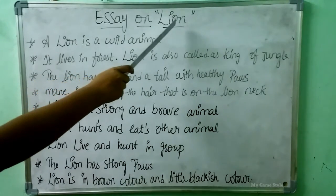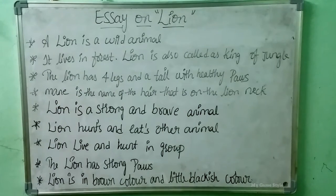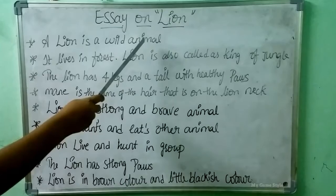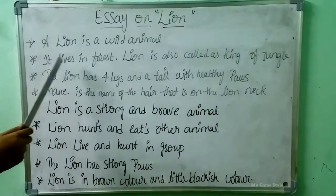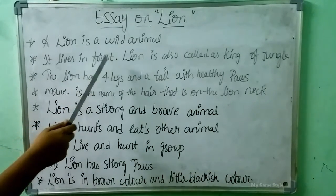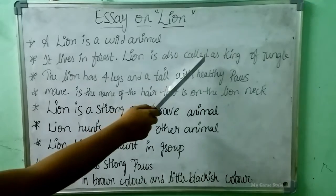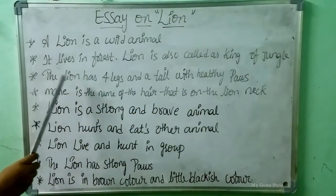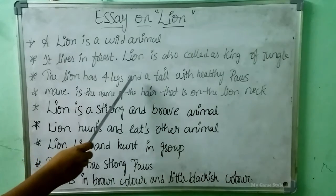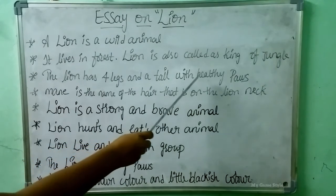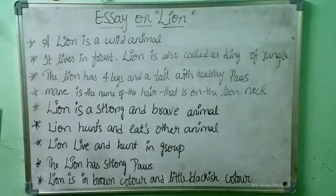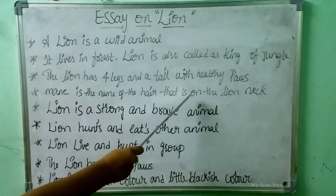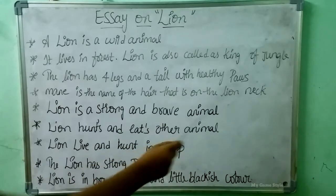Essay on lion. About lion we are learning now. A lion is a wild animal. It lives in forest. Lion is also called as king of jungle. The lion has four legs and a tail with healthy parts. Mane is the name of hair that is on the lion's neck.